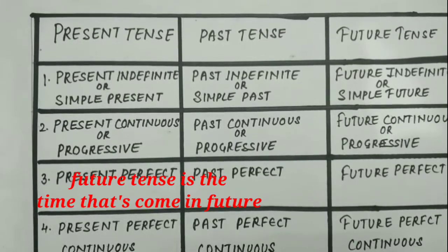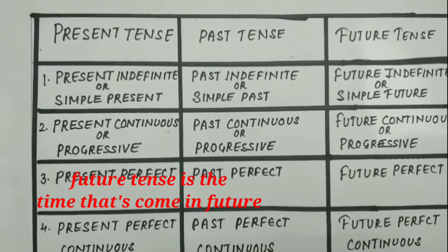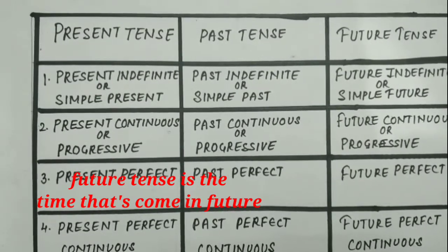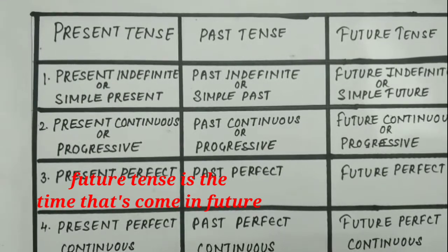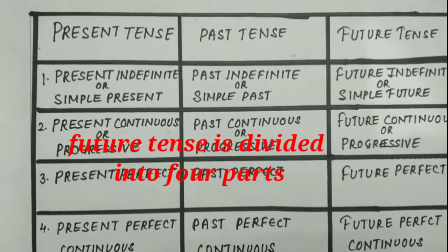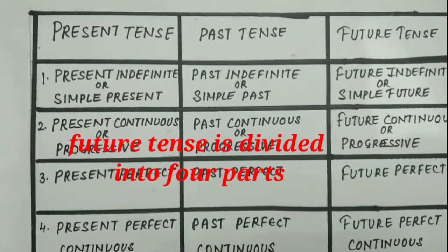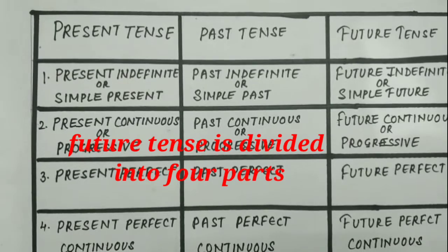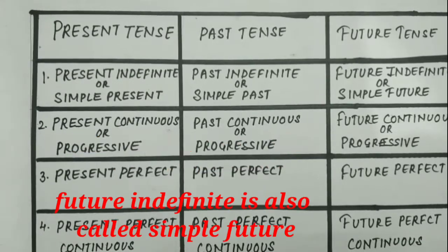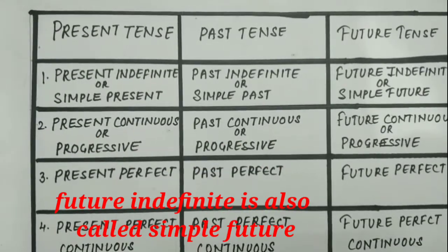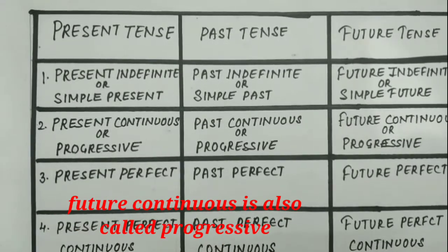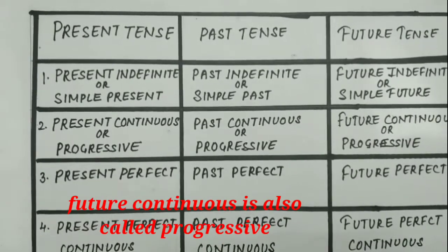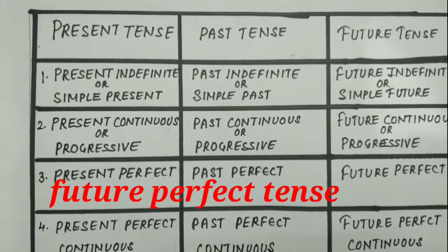Ab hum aa jaate hain future tense ki taraf. Future tense — bhavishya kaal. Aane wala samay future tense hota hai. Future tense ke bhi chare parts hote hain. Future indefinite ko simple future bhi kehate hain. Future continuous ko progressive bhi kehate hain. Aur future perfect tense.